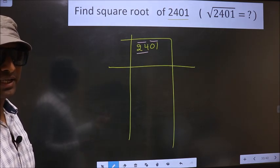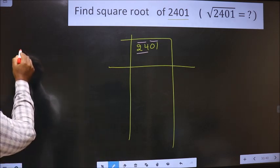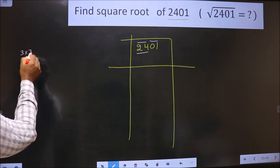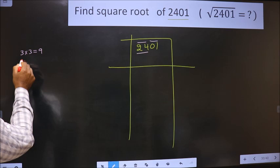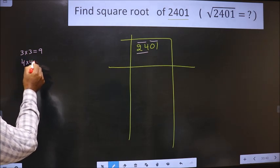And the square numbers are these. That is 3 into 3, 9. 4 into 4, 16.